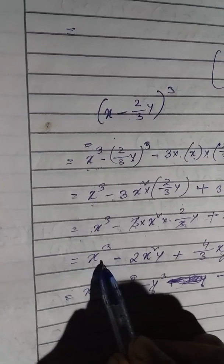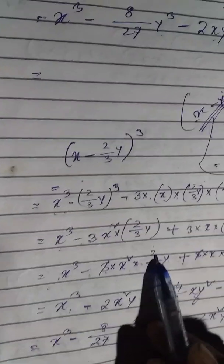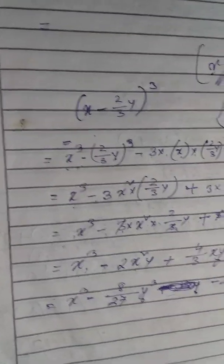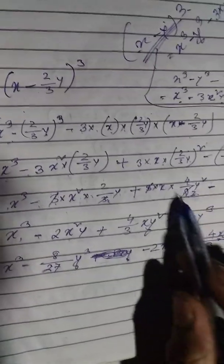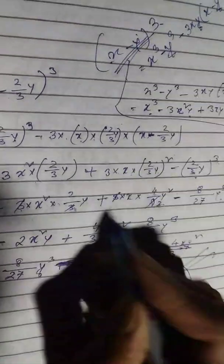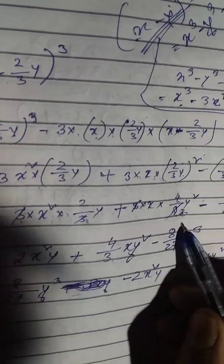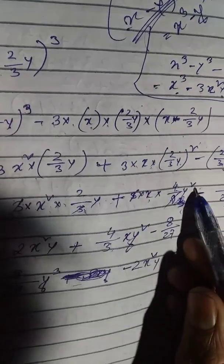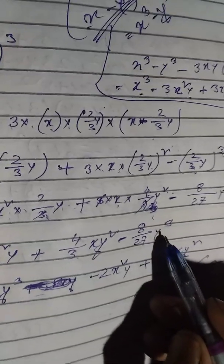X cube minus 2 X square Y. I get it, 1 and 2. Plus 4 by 3, this is 3 times 9, okay? This is 4 by 3, 4 by 3 XY square. Okay? Minus 8 by 27, this is Y cube. Minus 8 Y cube divided by 27. Okay?